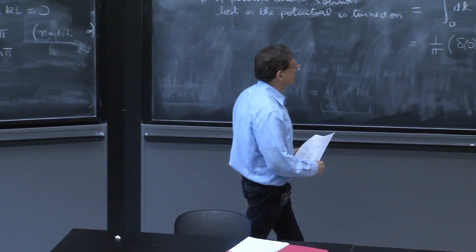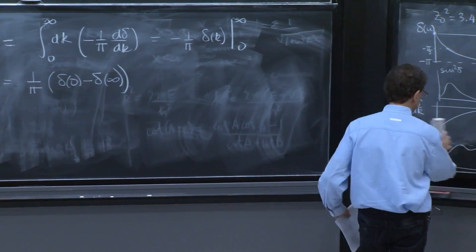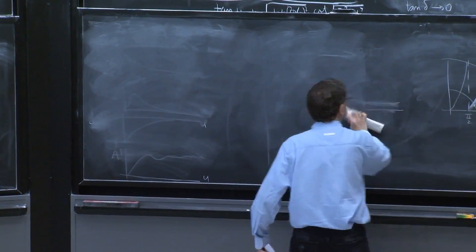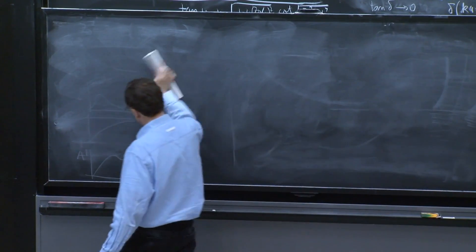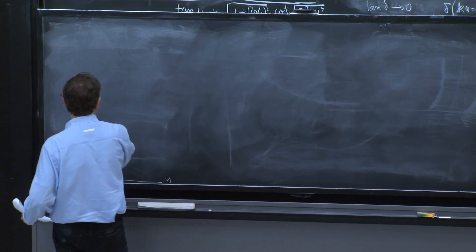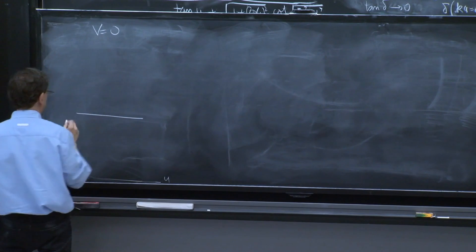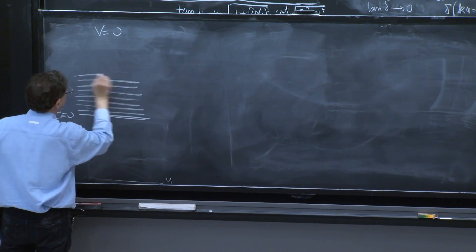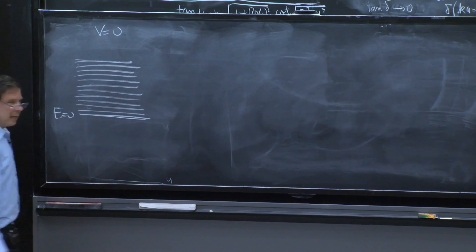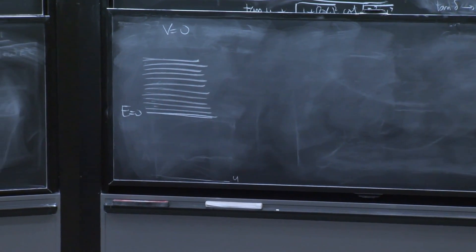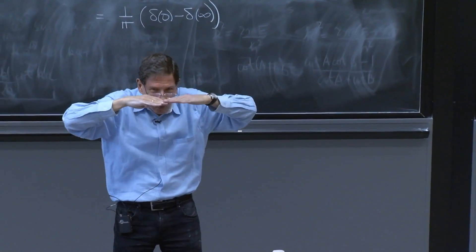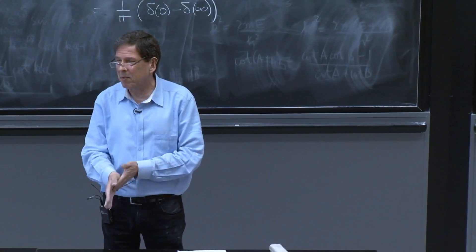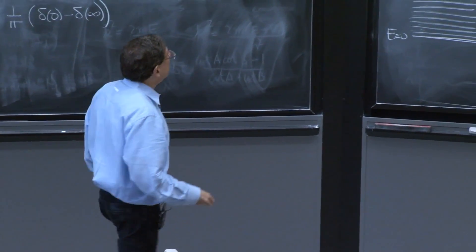Now, I want to emphasize that the situation is quite interesting. Let me make a little drawing here. So suppose here is the case where you have the potential equal to 0, and here is energy equal to 0. Then you have all these states. Now, even though we've put the wall, the wall allows us to count the states, but there are still going to be an infinite number of states.